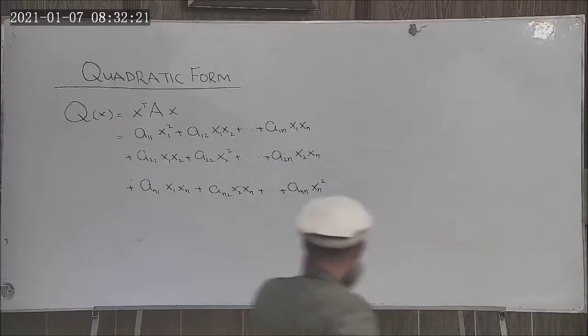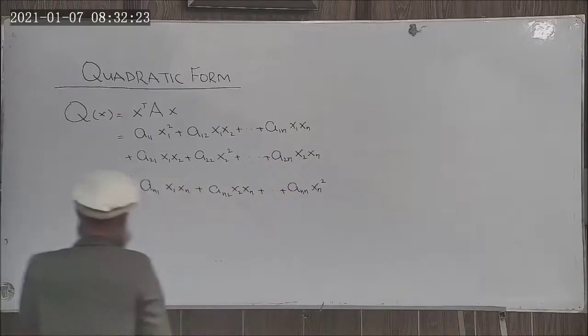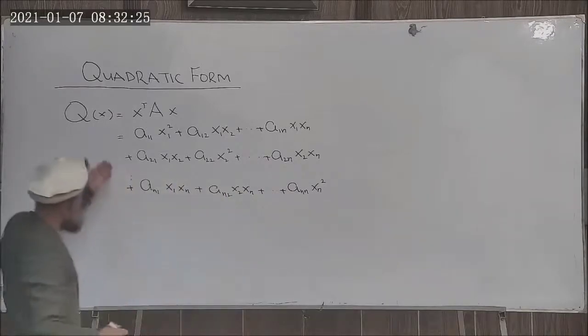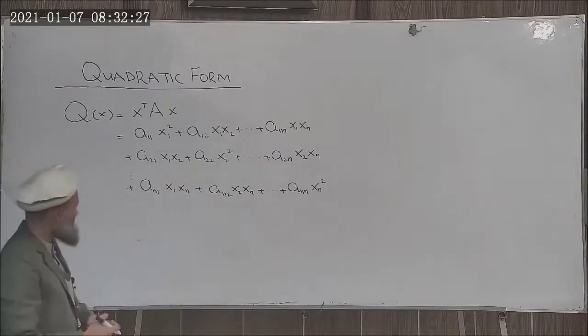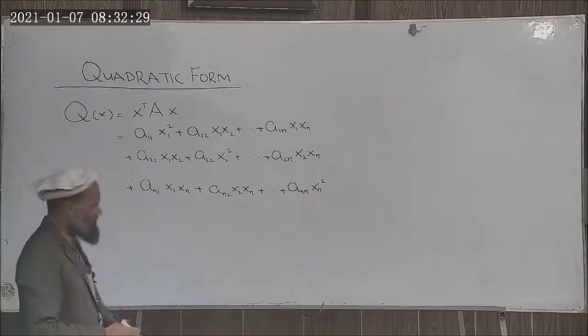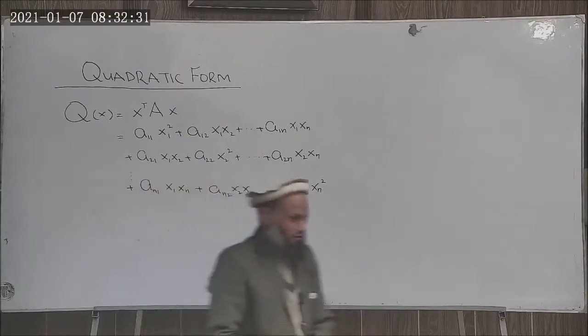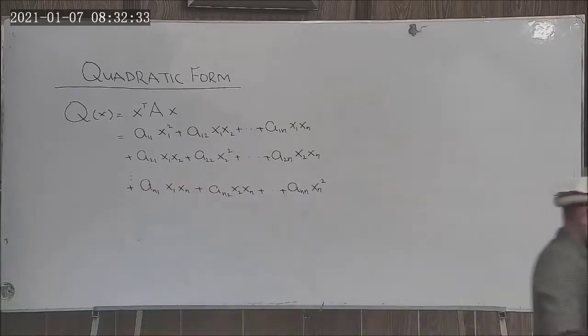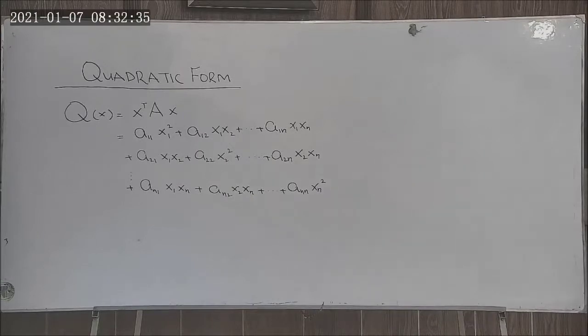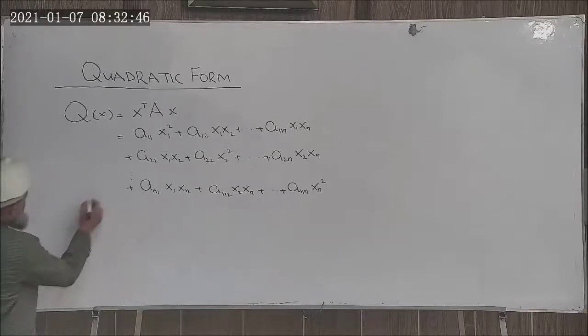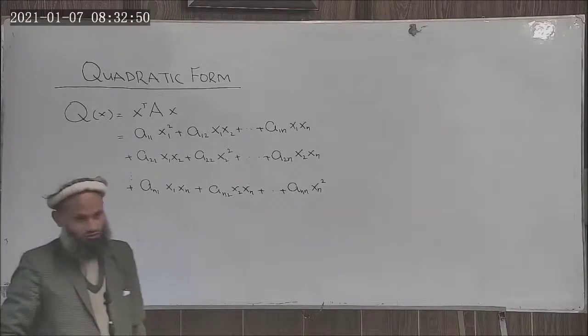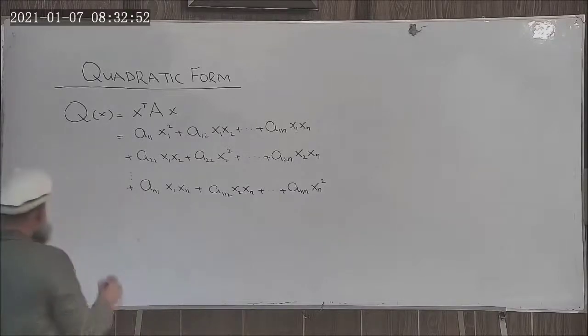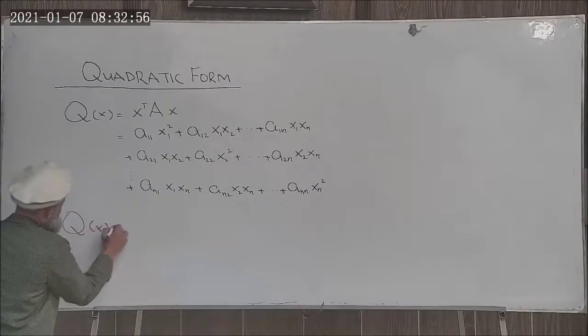This particular form is called quadratic form. For general case n by n matrix A, this is the quadratic form. In the last lecture we learned that this matrix A can be made symmetric matrix.